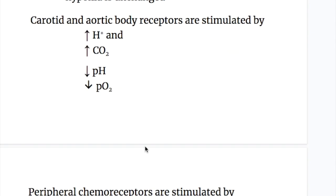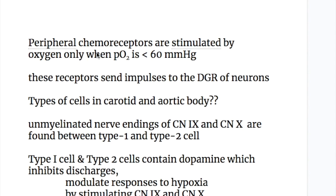The aortic and carotid body receptors are stimulated by increased hydrogen ion concentration, increased carbon dioxide, decreased pH, and by decreased PO2. Peripheral chemoreceptors are stimulated by oxygen only when PO2 is less than 60 mmHg. These receptors send impulses to the dorsal group of neurons in the medulla.